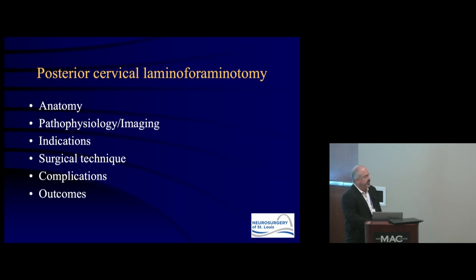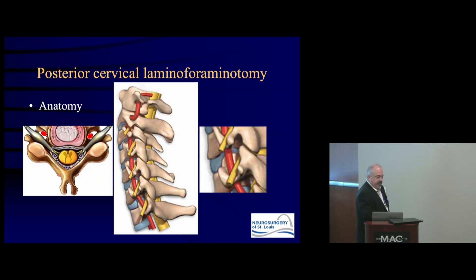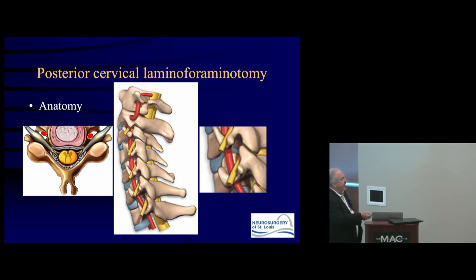The neural foramen is bounded by the facet in the back, and the edge of the disk space and uncovertebral joint with the vertebral body anteriorly. On the lateral view, the nerve root exits here, and the structure right on top of it is the leading edge of the superior facet — that is ultimately what we have to remove to decompress the nerve root, bearing in mind the relationship to the vertebral artery.